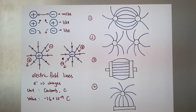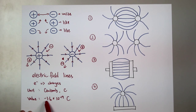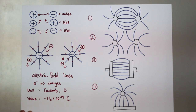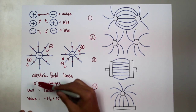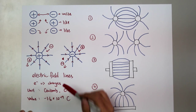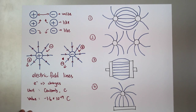However, the negative value here doesn't mean that the value is a negative value. Instead, it shows that the electron carries a negative charge but not a positive charge.